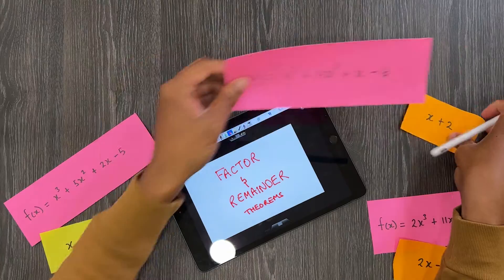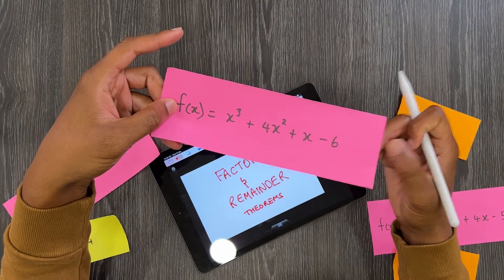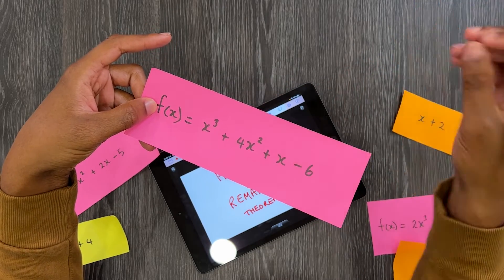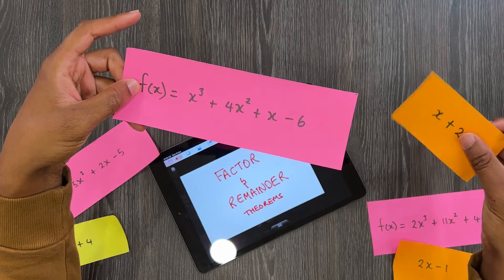But first, let me give you a little background on factor and remainder theorem. So this is a function, it's a polynomial: x³ + 4x² + x - 6. And the factor theorem is saying if this linear factor here can go into this...